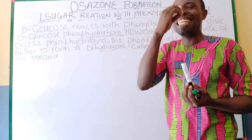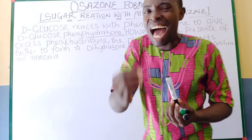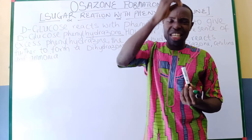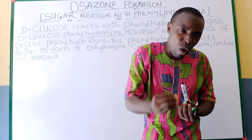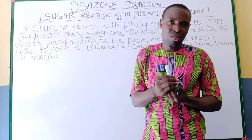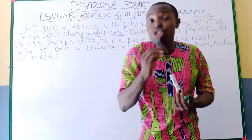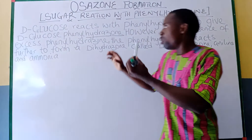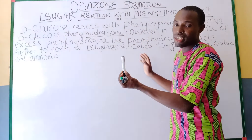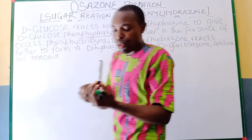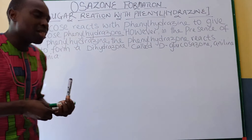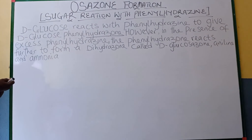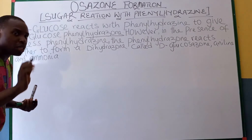And thereafter, aniline and ammonia are formed or produced. Now look at it — the reaction scheme and mechanism is as follows.